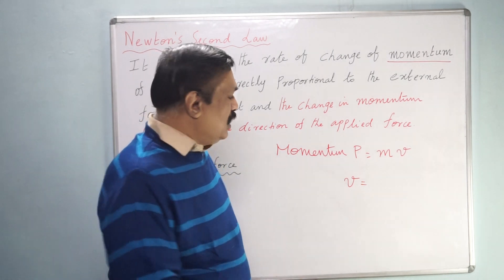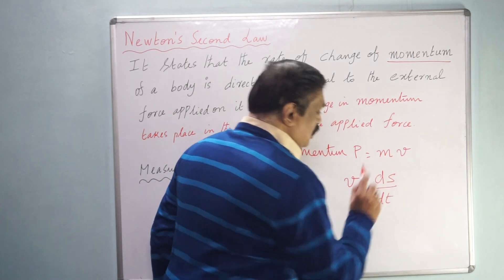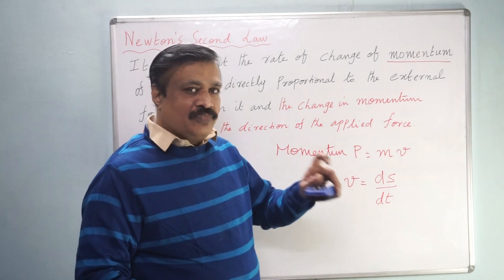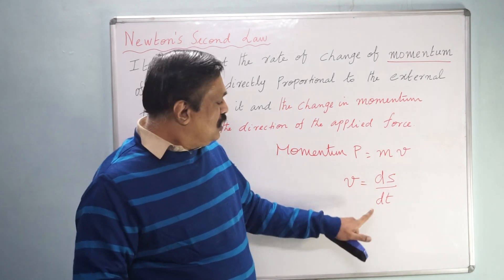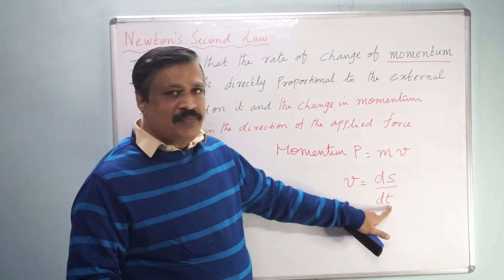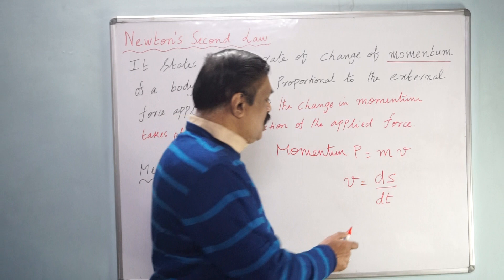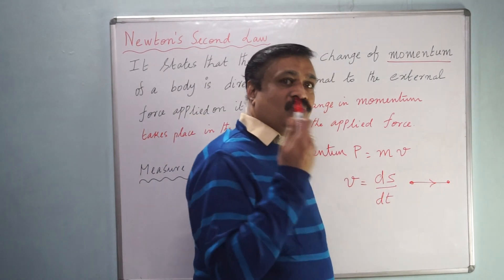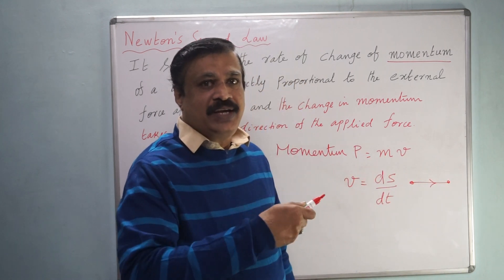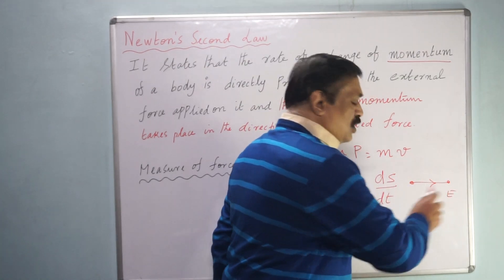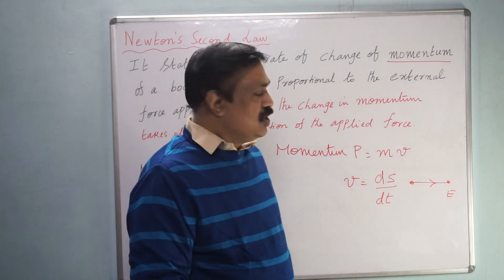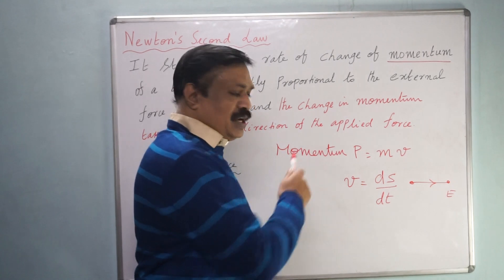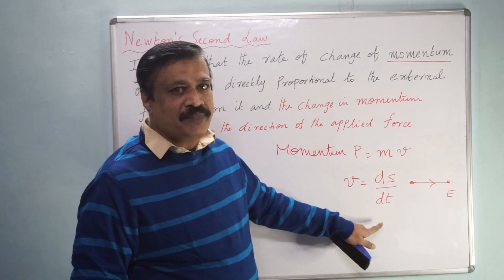Now, velocity is defined as ds by dt — that means rate of change of displacement. Whenever you define some term and it starts with 'rate of', that means dt is in the denominator. Here ds is the displacement — an object is here and it is displaced in a direction, meaning you are measuring the distance as well as mentioning the direction, east or west. How much time the displacement takes place — that gives you velocity. Therefore velocity is defined as ds by dt, rate of change of displacement.